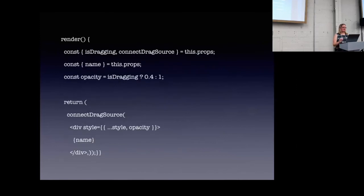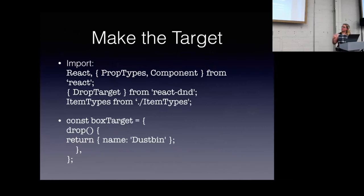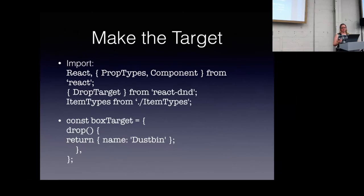Now that we've made our draggable box, we need to have a target to drop it into. You'll notice some similarities in setting this up compared to our draggable box. The target doesn't need to know about the box or the container. It does import DropTarget from react-dnd — which is one of those predefined higher order components — and item types, because we may want this target to know what types of items it will accept or not accept.